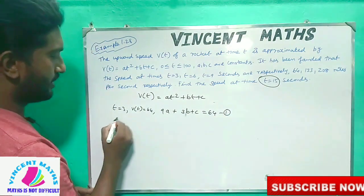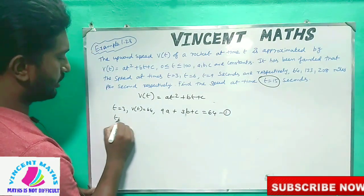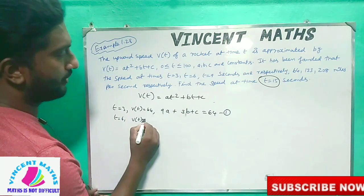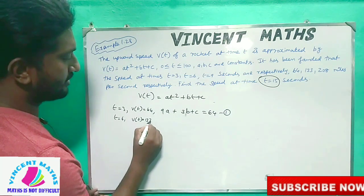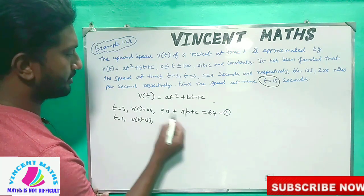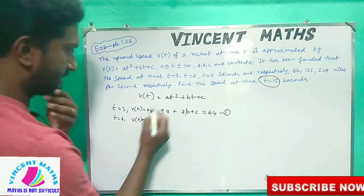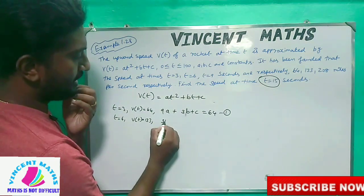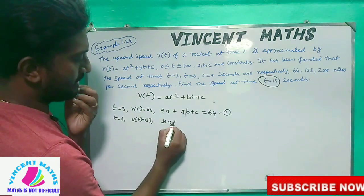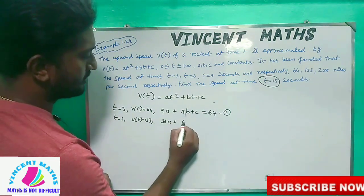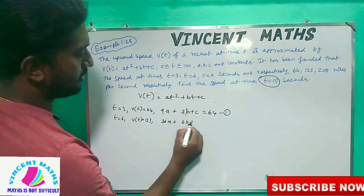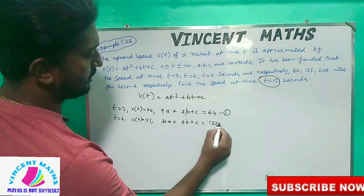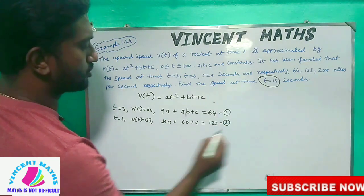And if t equals 6, we can see V(t) equals 133. Then substituting t=6: 6 squared gives us 36a plus 6b plus c equals 133. So that is equation 2.